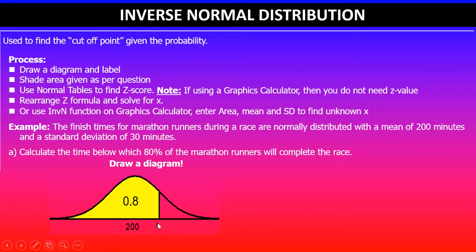The mean value is 200 and the area value here which denotes the probability is 0.8. Once you've done that then you can use your graphics calculator.